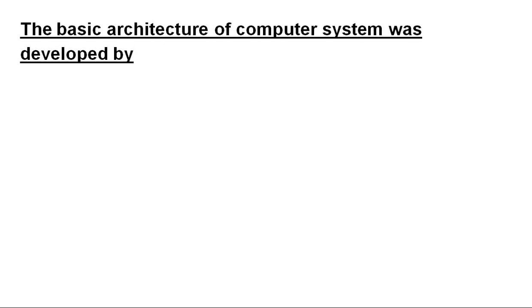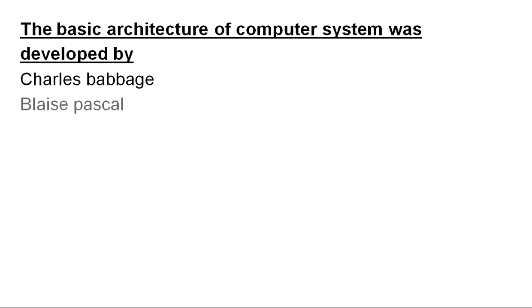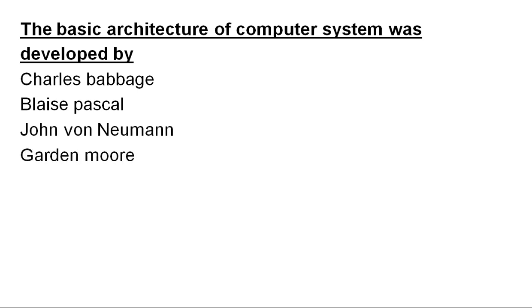The basic architecture of the computer system was developed by whom? Options: Charles Babbage, Blaise Pascal, John Von Neumann, or Gordon Murray. The correct answer is: the basic architecture of computer system was developed by John Von Neumann.